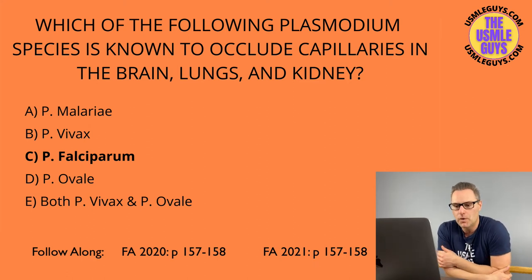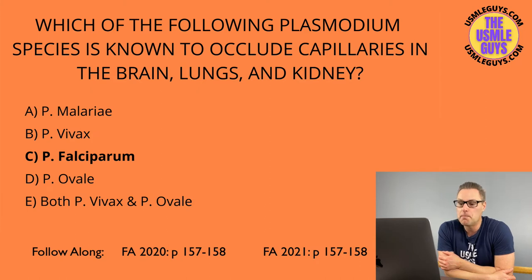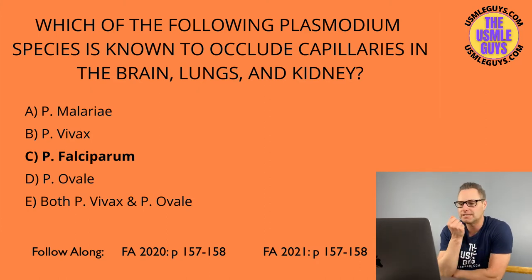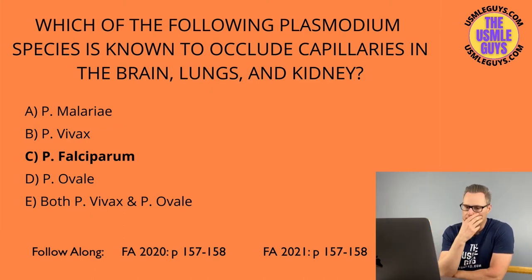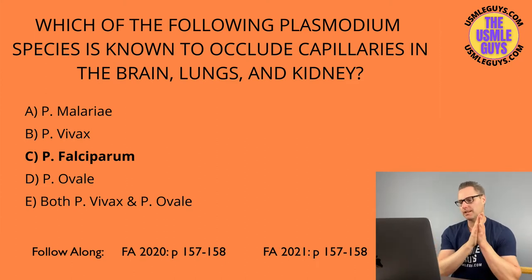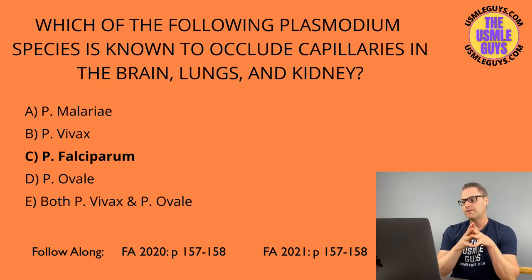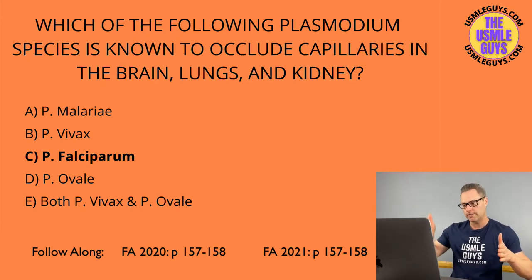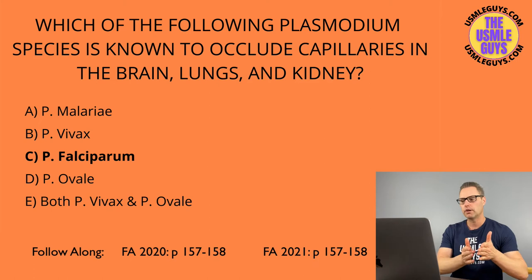Next, we have the Plasmodium species, which include Plasmodium vivax, ovale, falciparum, and malariae. This is transmitted by the Anopheles mosquito. As an overall theme, malaria is characterized by fever, headache, anemia, and splenomegaly. Plasmodium vivax and ovale are characterized by fever on a 48-hour cycle, meaning fevers are 48 hours apart.